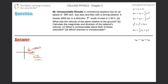Number 69, unreasonable results. A commercial airplane has an airspeed of 280 meters per second due east and flies with a strong tailwind. It travels 3,000 kilometers in a direction 5 degrees south of east in 1.5 hours. Letter A: what was the velocity of the plane relative to the ground?